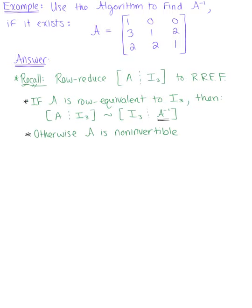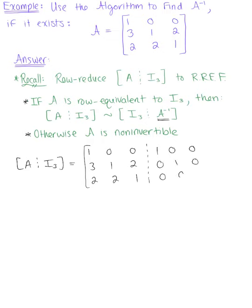Let's start by row reducing our augmented matrix with the 3 by 3 identity. We have the matrix 1, 0, 0, 3, 1, 2, 2, 2, 1 augmented with the identity matrix: 1, 0, 0, 0, 1, 0, 0, 0, 1. The row reduction process is the same as before — we just need to be careful since our matrix is much larger.